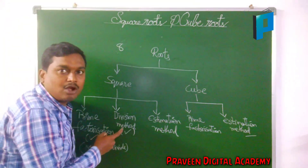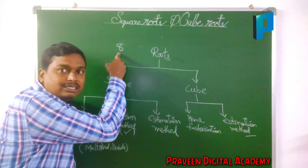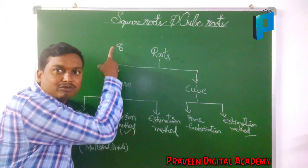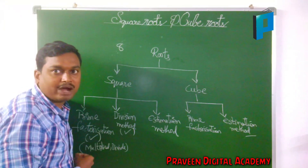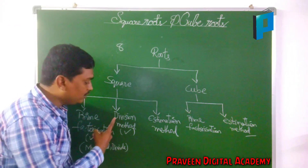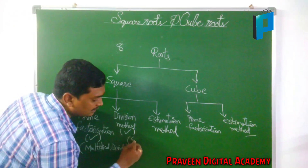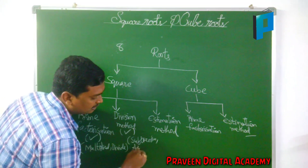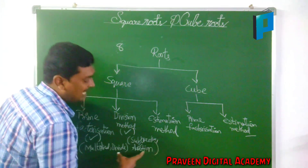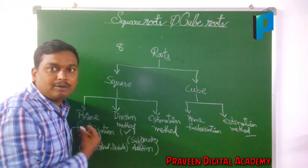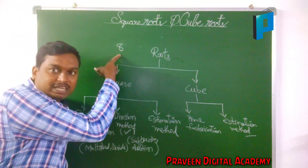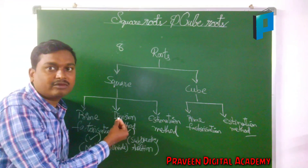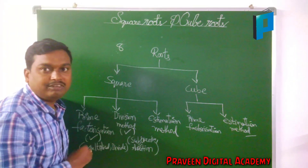If they are asking how much number should be added to make it a perfect square, or how much number should be subtracted from it to make it a perfect square — if they are asking addition or subtraction, we use the division method.